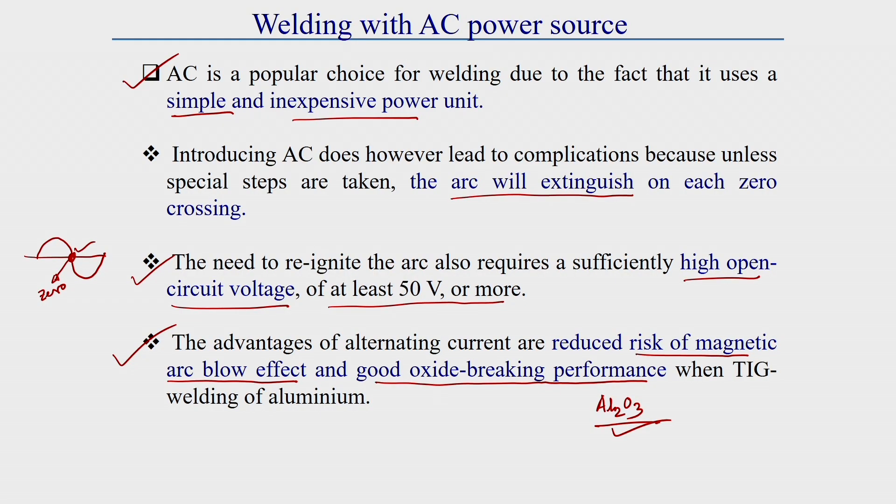The drawback of AC power sources is arc extinguishing at each cycle. The advantages are elimination of magnetic arc blow and good oxide-breaking capability. These AC power sources are popularly used in SMAW (shielded metal arc welding) and TIG (tungsten inert gas) arc welding.